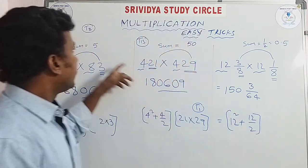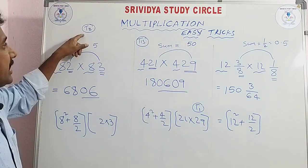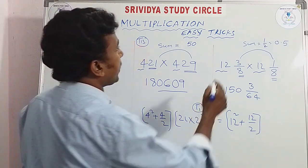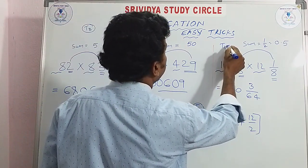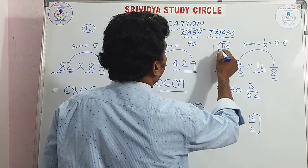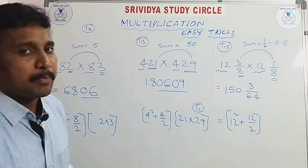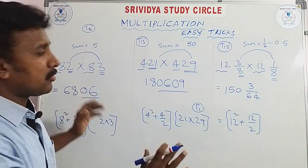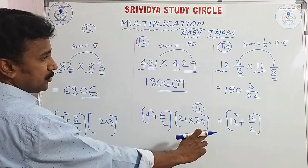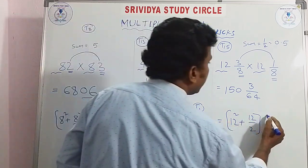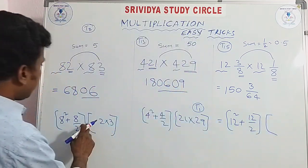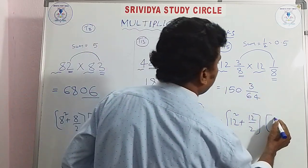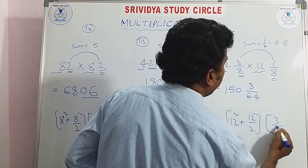First, we explain trick number 8, then trick number 13 and 15. We can explain this video: how the numbers work, the same condition applied to just multiplication — these are the key tricks.